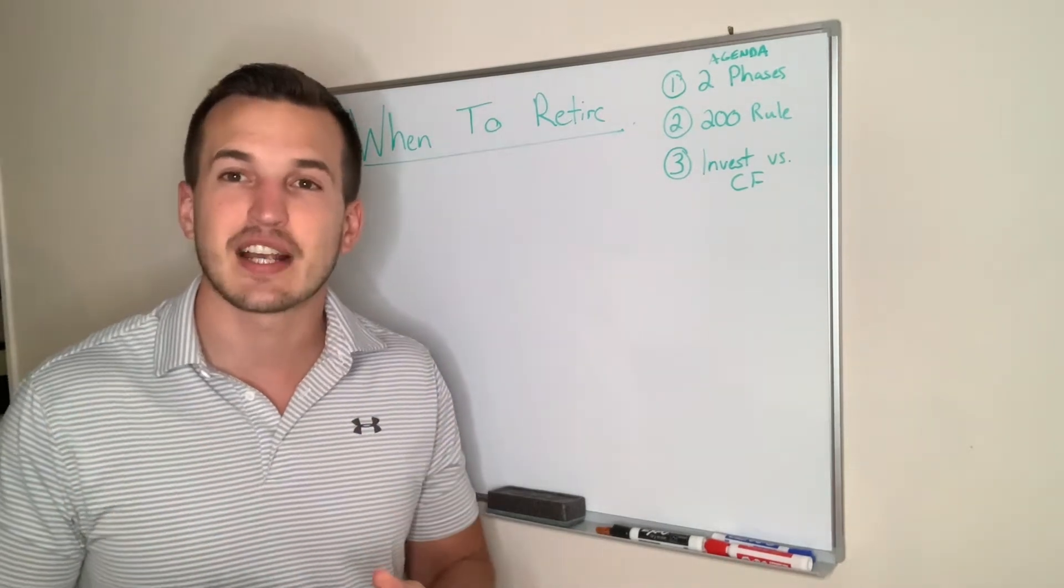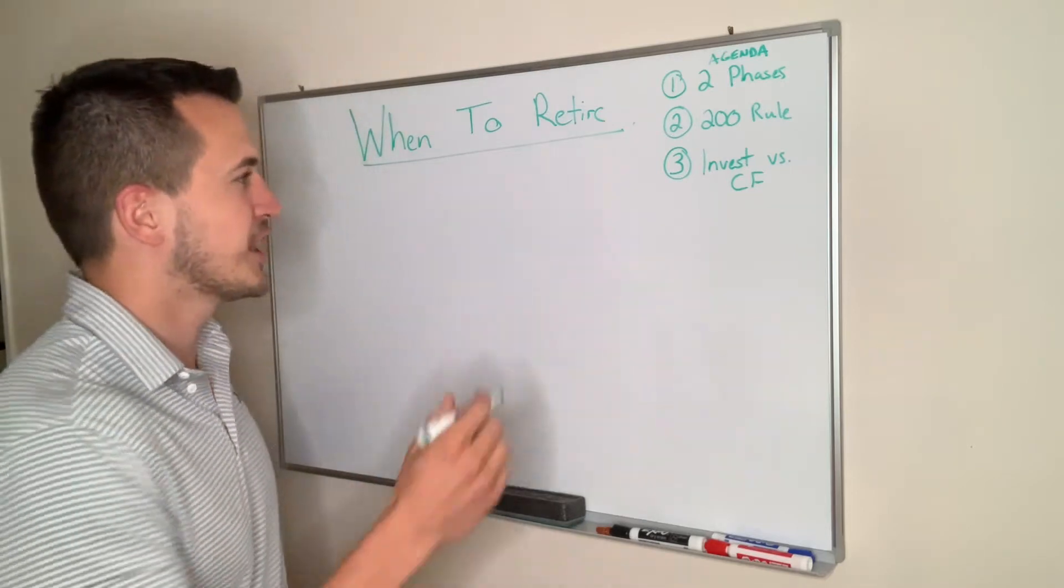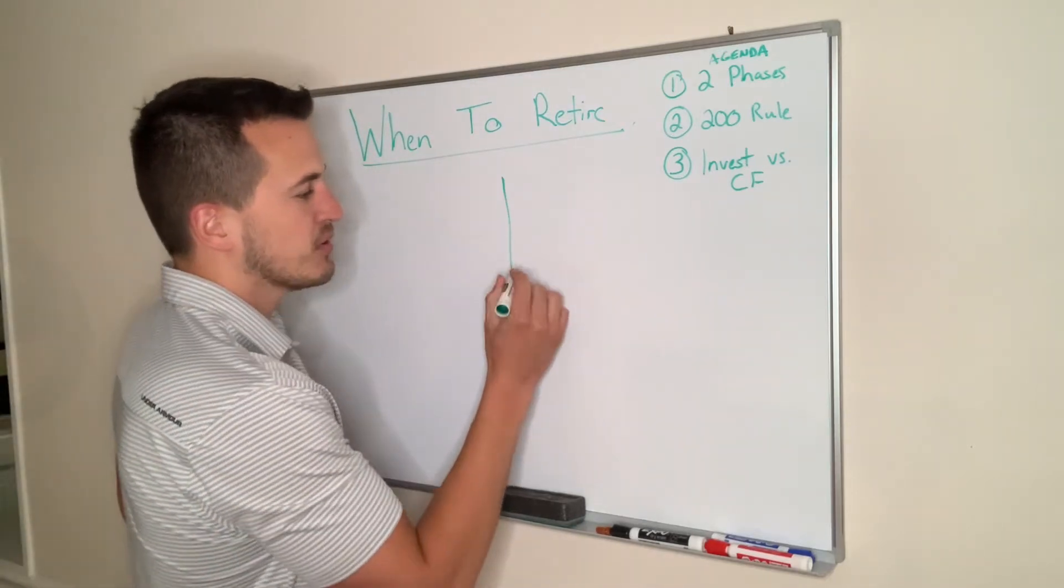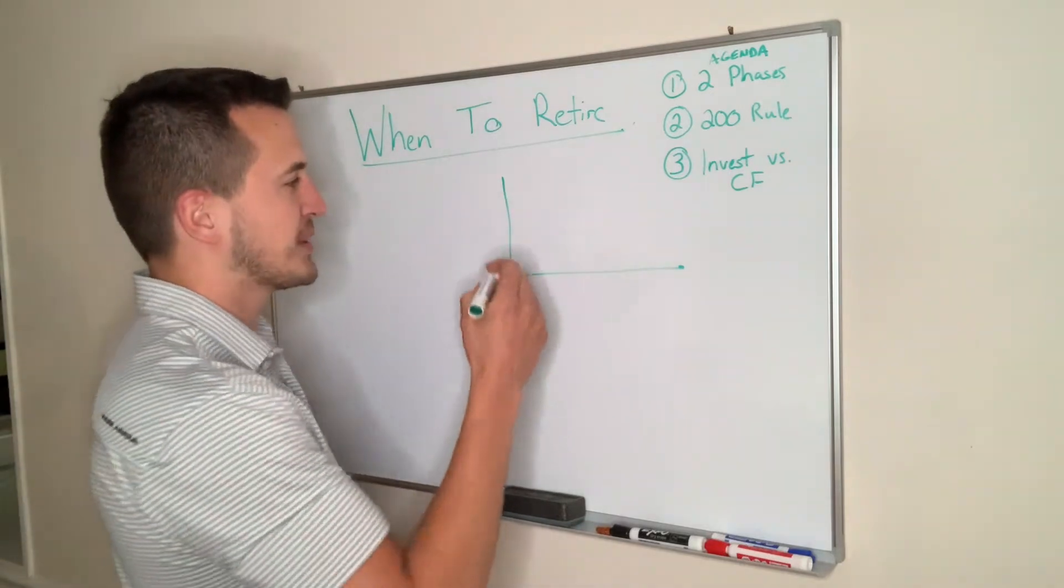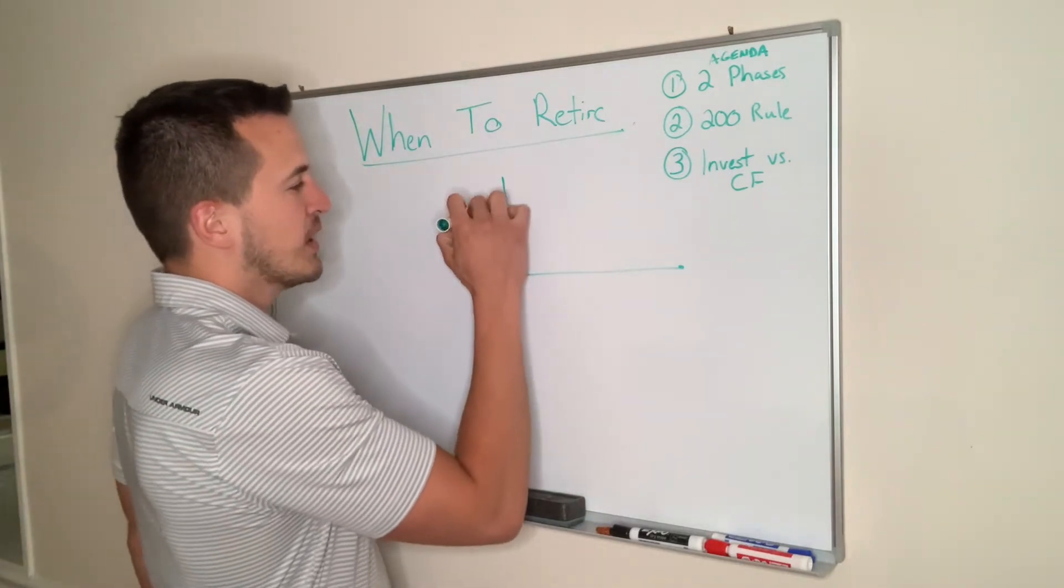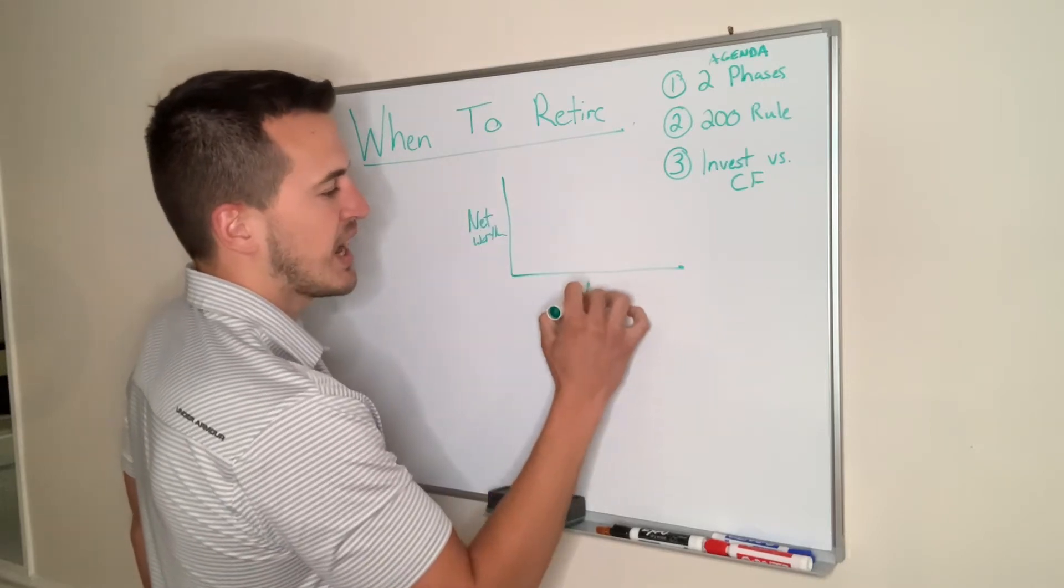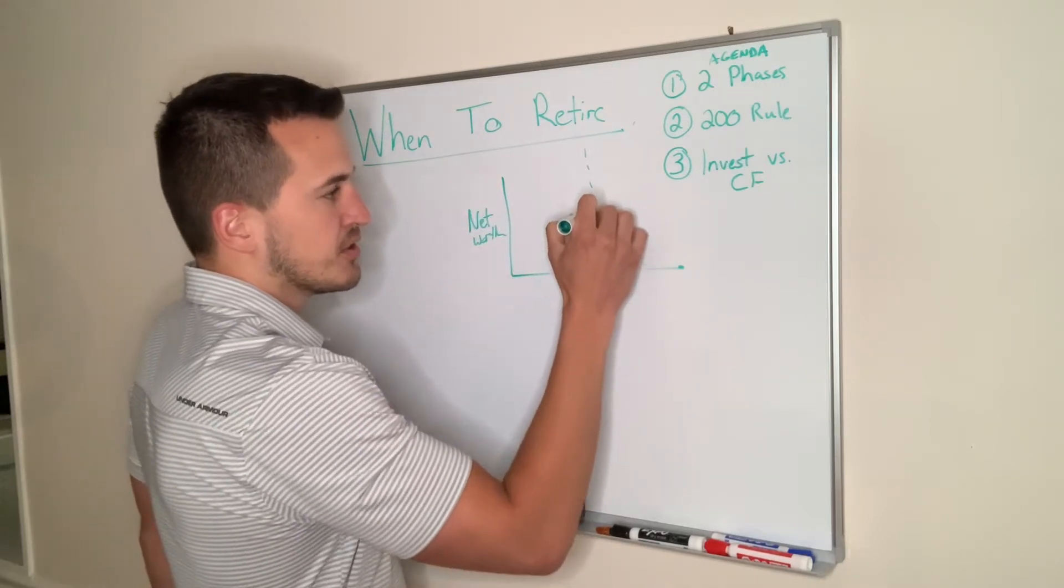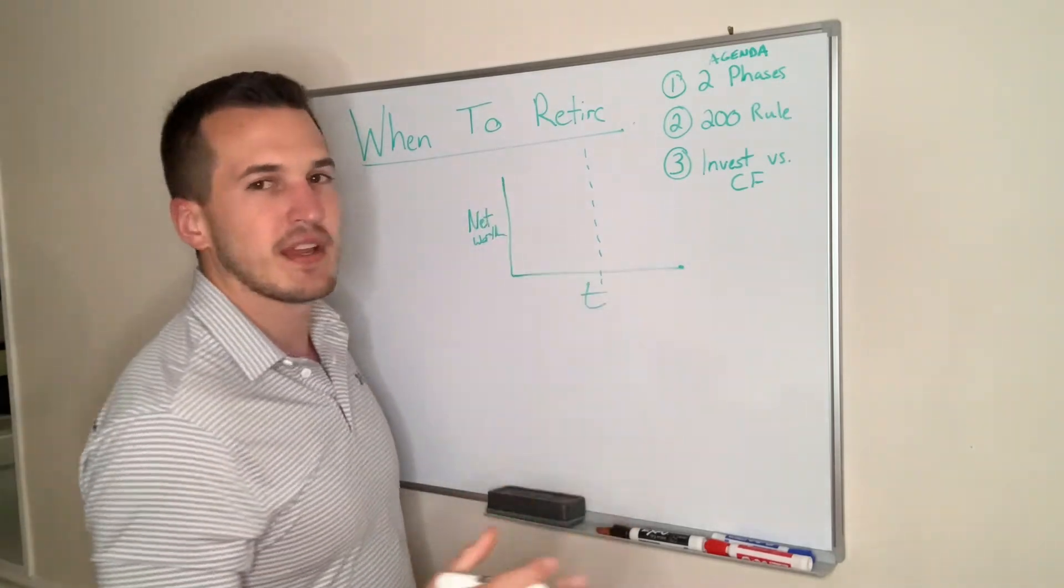The first concept is the two phases of life. This is incredibly important to understand. If you look at a graph of your life, I love thinking in terms of graphs because it just makes it common sense for me. If you look at your net worth over time, in this new structure and methodology that you're going to have, there's two phases of your life.